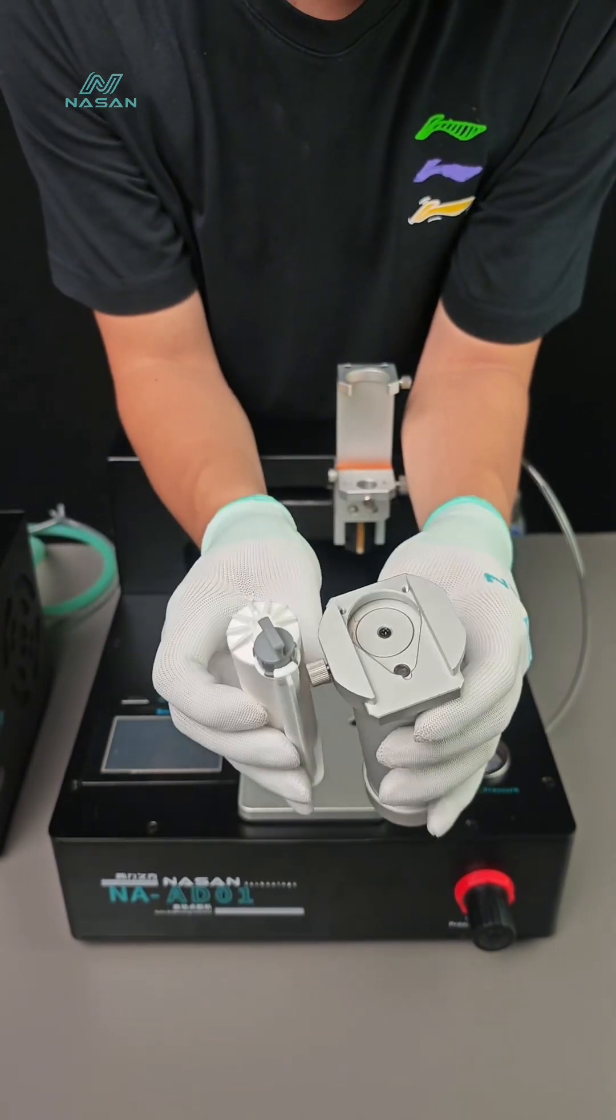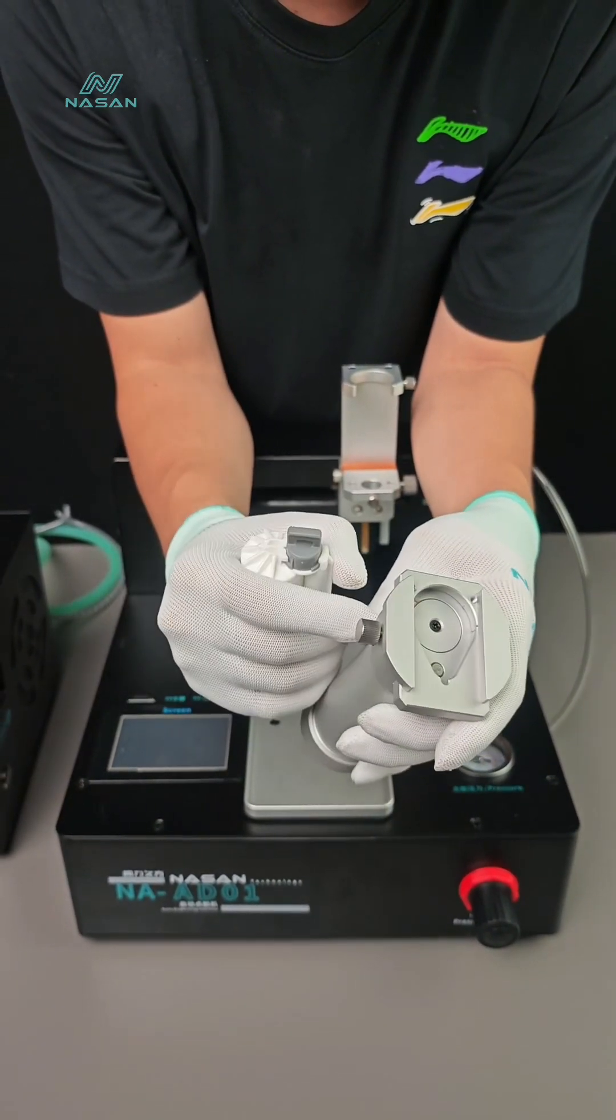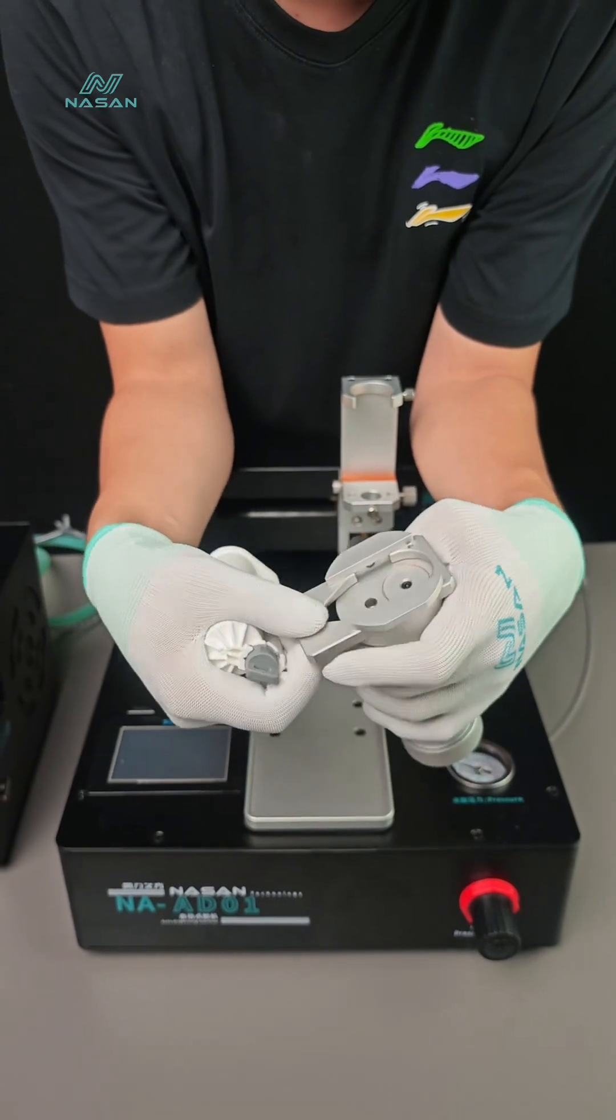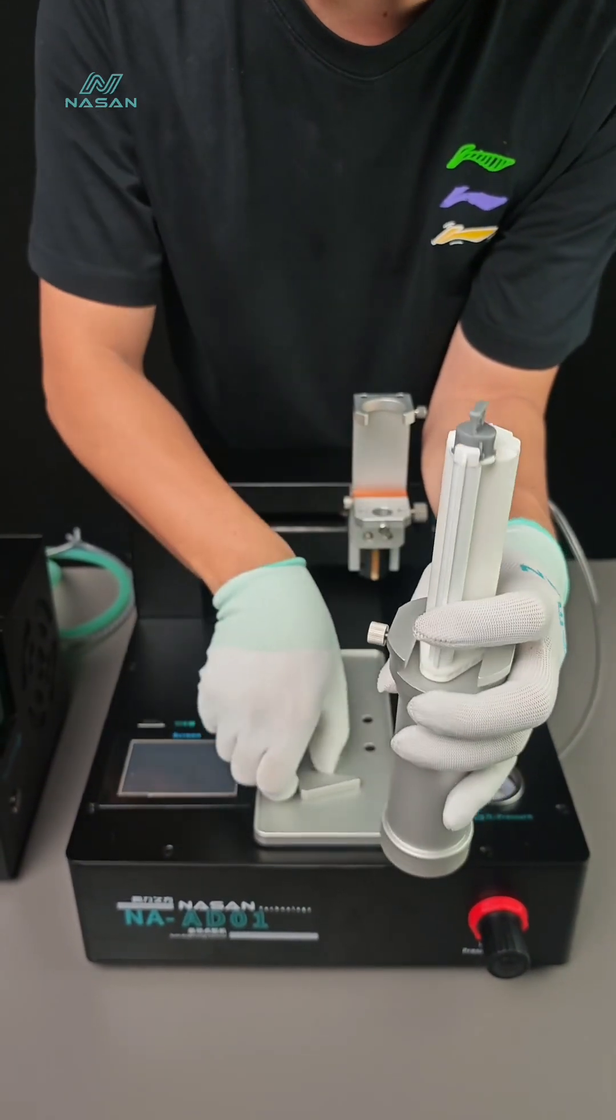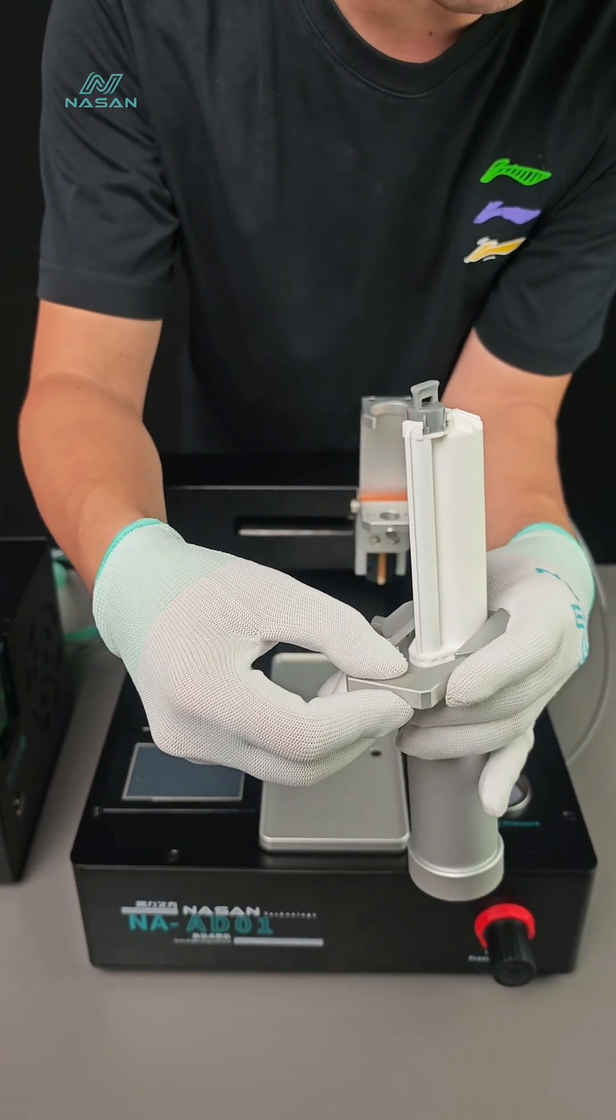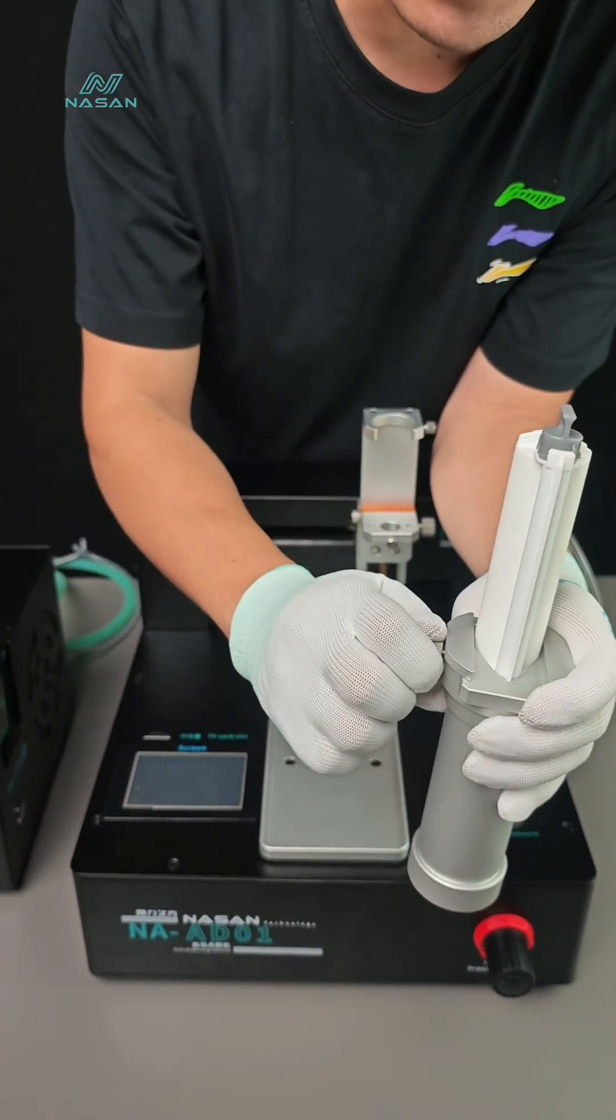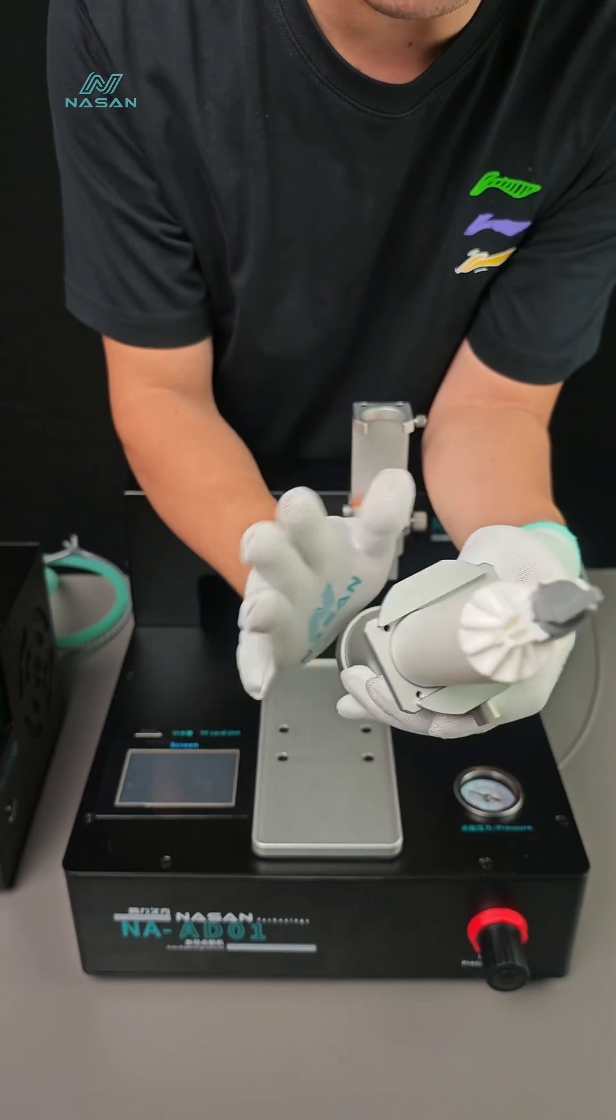Now let's see how to install the AB glue. Loosen the screw on the barrel. We can remove this part. Put the AB glue in and install it back. And lock the screws. And that's it.